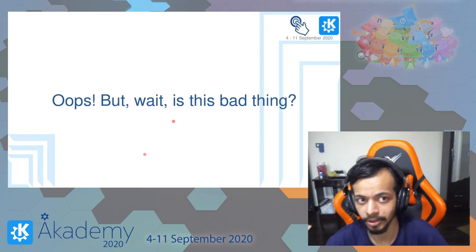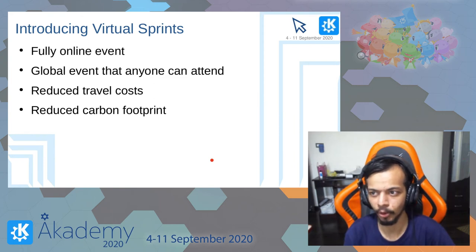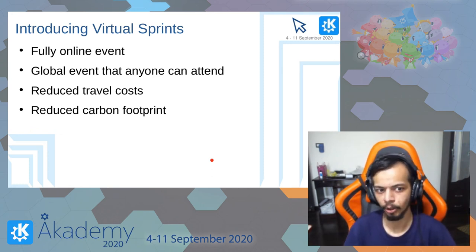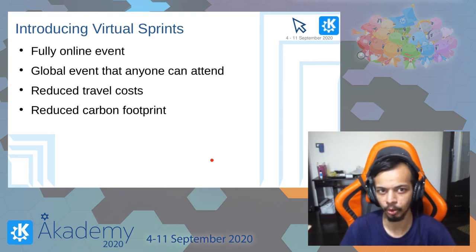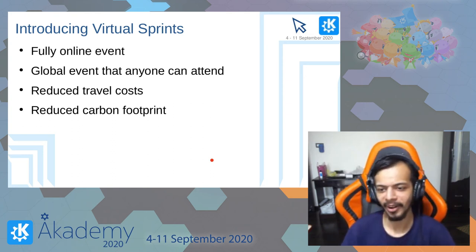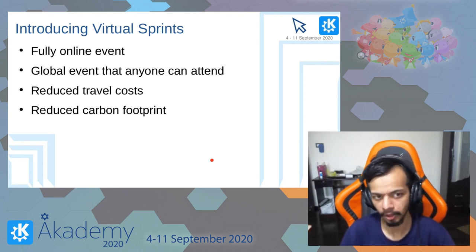Is it a bad thing that this happened for our sprints? In my opinion, we also learned a totally new way of getting together — the virtual sprint. Instead of in-person events, this is a fully online event. Since it's fully online, we don't need to travel, so it's pretty much global. You don't need a visa to attend, and we have reduced travel costs and, by extension, also reduced carbon footprint from traveling during sprints.